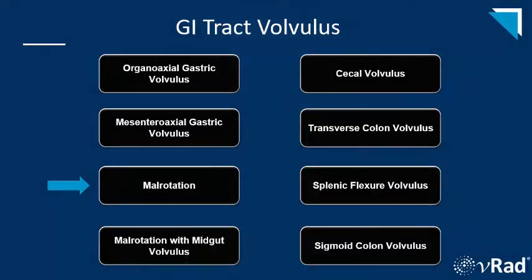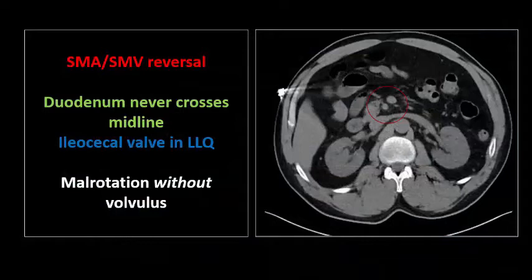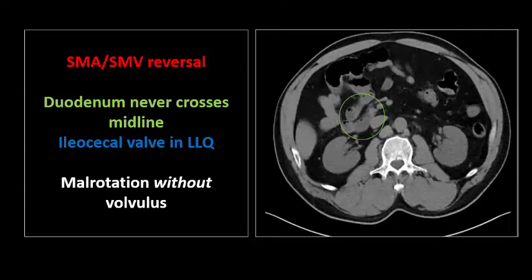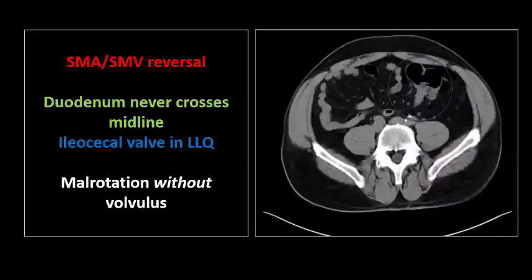Now we'll move on to the small bowel. Since malrotation is the major predisposing factor for midgut volvulus, I wanted to review those findings. Here's a classic example of bowel malrotation seen incidentally on an adult patient on CT. Note the SMA-SMV reversal where the larger caliber SMV is now to the left of the smaller caliber SMA. I want to encourage everyone to specifically follow the stomach and duodenal C-sweep on all patients, and here we see that the duodenum never crosses the midline. Note also that the ileocecal valve is in the left lower quadrant. If you're specifically looking for the appendix on everyone — which you should be doing — and can't find the cecum in the right lower quadrant, this can be the first tip-off for bowel malrotation. It's important to note this anatomy on everyone because although malrotation is congenital, volvulus can occur into adulthood if not corrected.